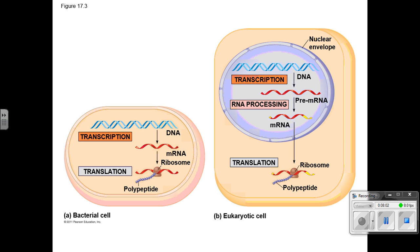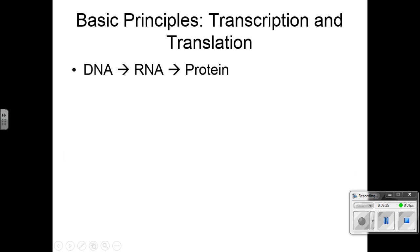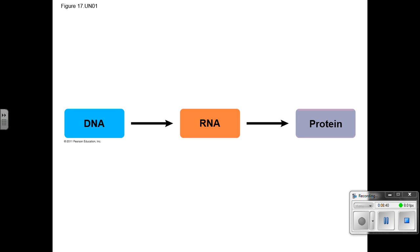In bacteria, the messenger RNA can be translated while transcription is still occurring. In eukaryotic cells, the mRNA has to leave the nucleus, then attach to the ribosome, and then it can build the polypeptide. Here's the big picture: DNA → RNA → protein. DNA is your instructions, RNA is the intermediate, and protein will be all the building blocks of you. DNA to RNA is transcription; RNA to protein is translation.